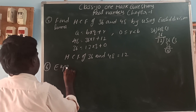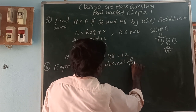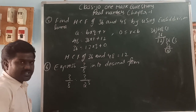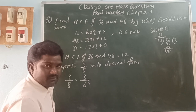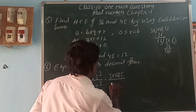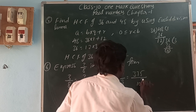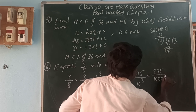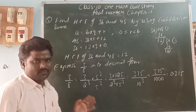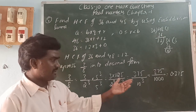Express 3/8 in decimal form. We write 8 as 2³. To make the denominator a power of 10, we multiply numerator and denominator by 5³. That is (3 × 125) / (2³ × 5³) = 375/10³ = 375/1000. Since there are 3 zeros, we get 3 decimal places. So the decimal form of 3/8 is 0.375. When denominators are powers of 2, 5, or both, we can get a terminating decimal.